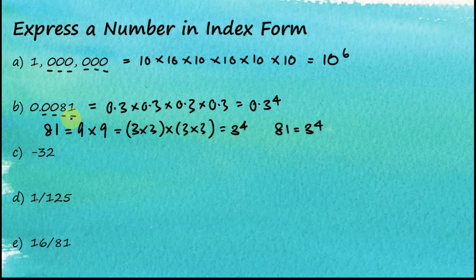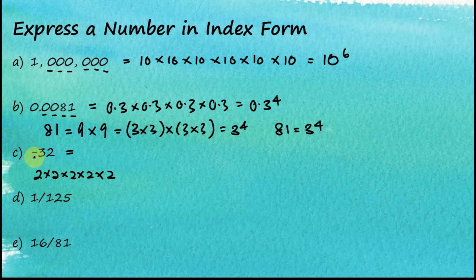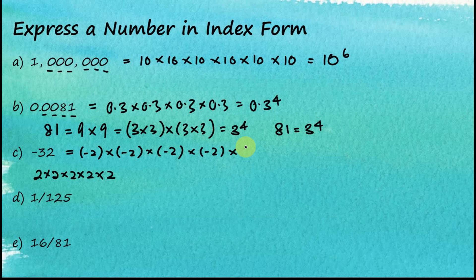Example C: negative 32. You should be able to tell that 32 is equal to 2 times 2 times 2 times 2 times 2. However, since this is a negative number, to get negative 32 it needs to be negative 2 times negative 2 times negative 2 times negative 2 times negative 2, which equals (negative 2) to the power of 5.